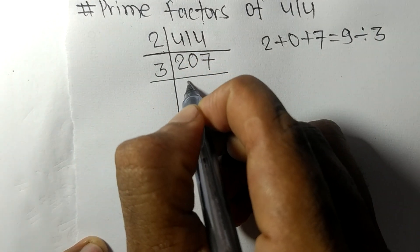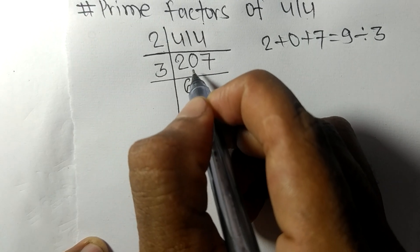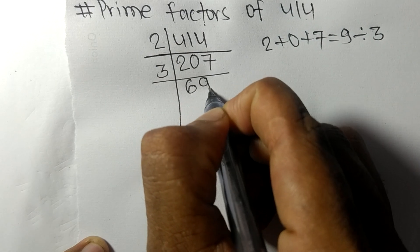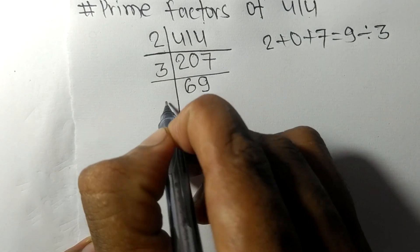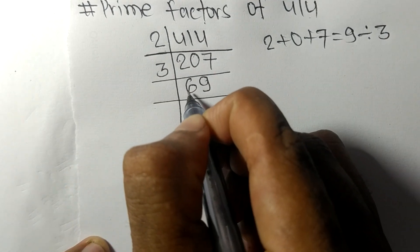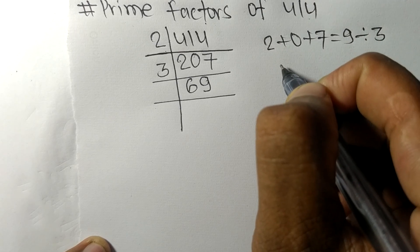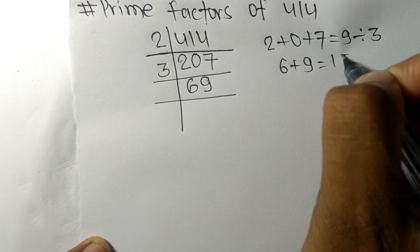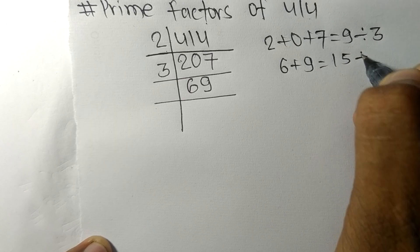Now we got 69. When we add 6 plus 9, we get 15, and 15 is exactly divisible by 3, so 69 is also divisible by 3.